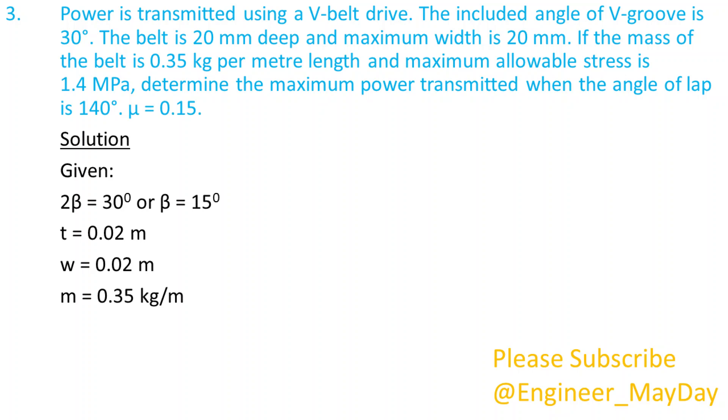M equals 0.35 kilograms per meter, sigma equals 1.4 times 10 to power 6 newtons per squared meter, theta equals 2.444 radians, Mu equals 0.15.